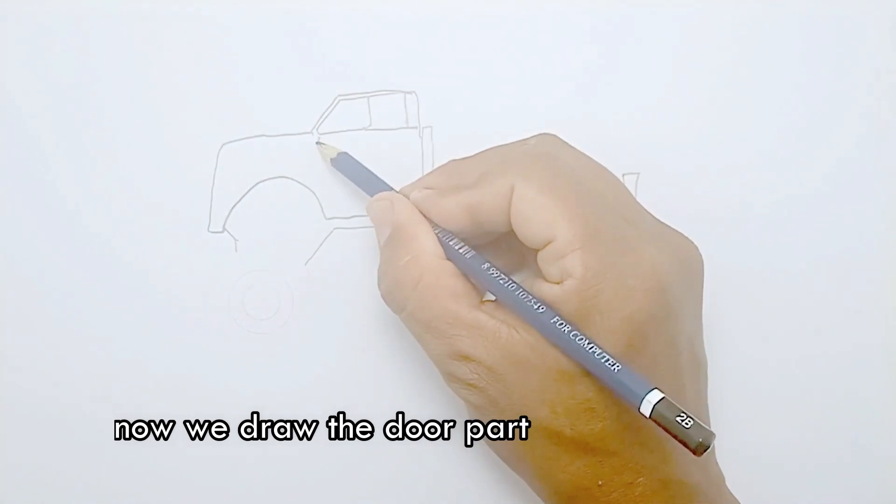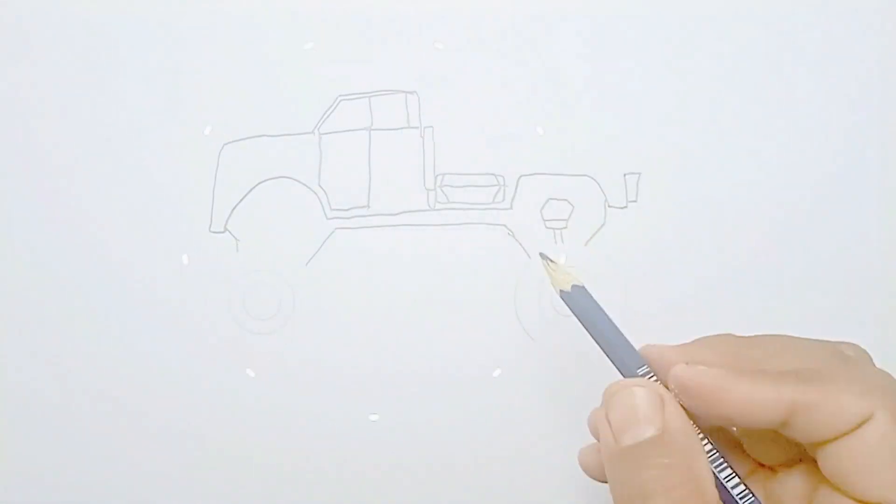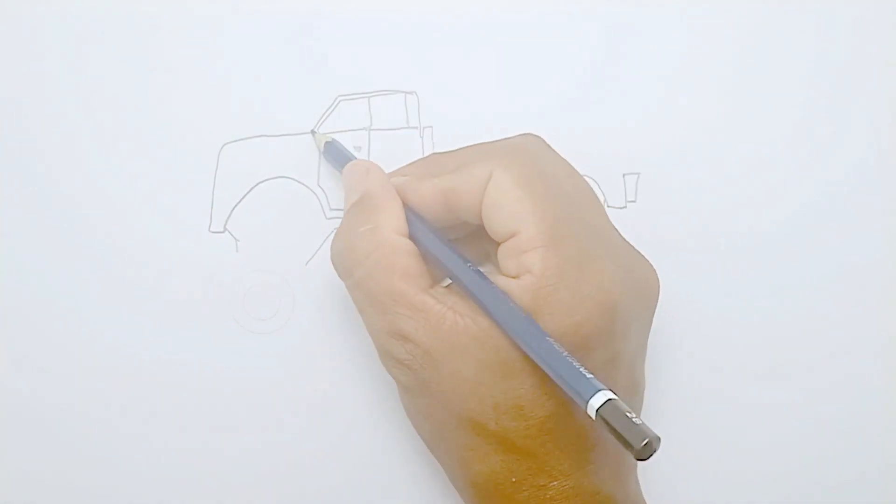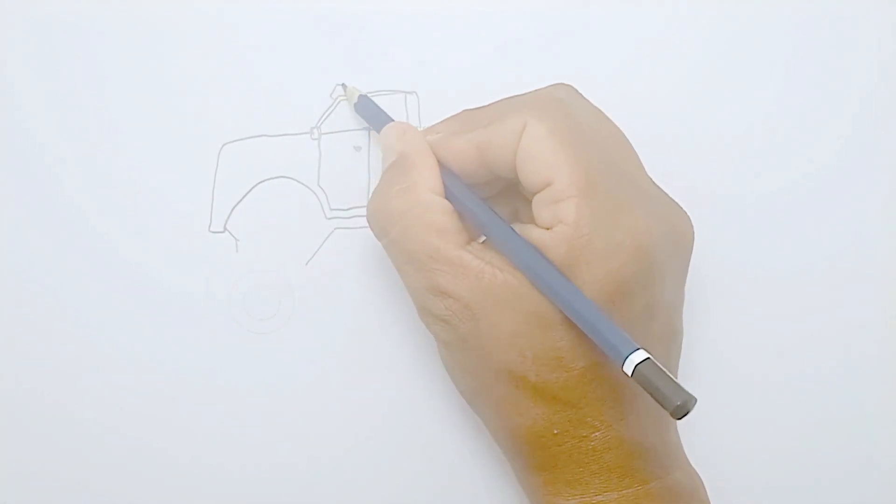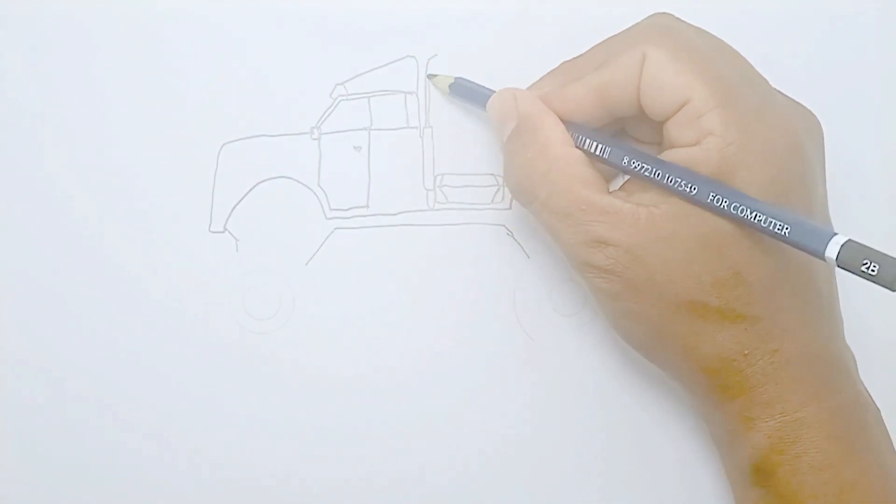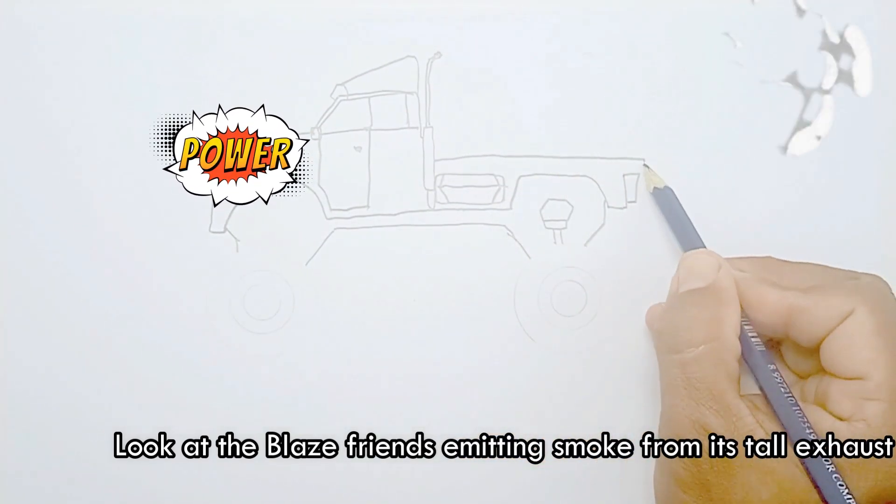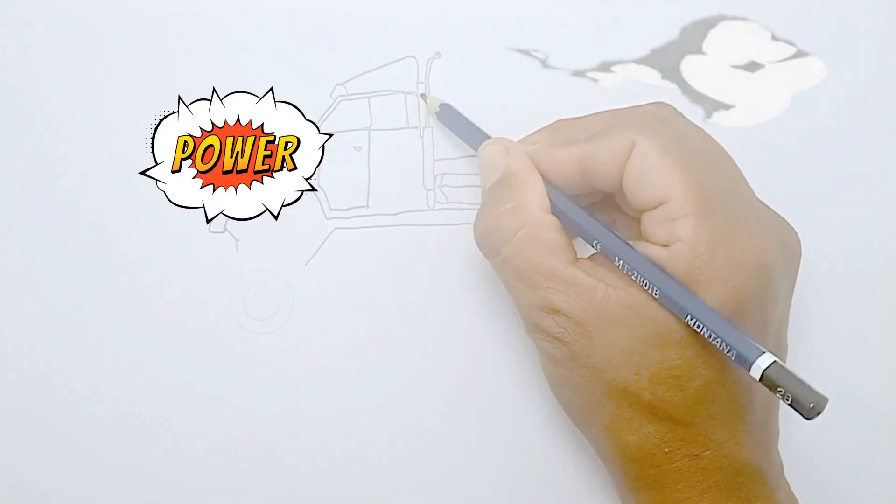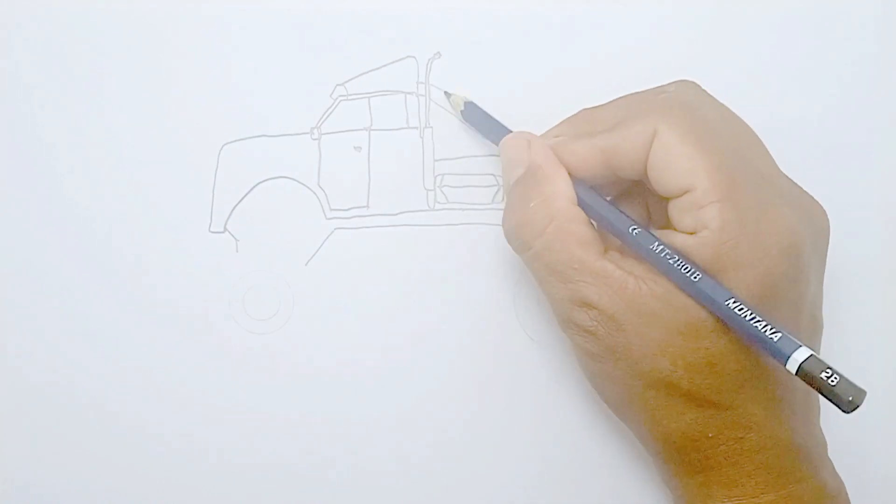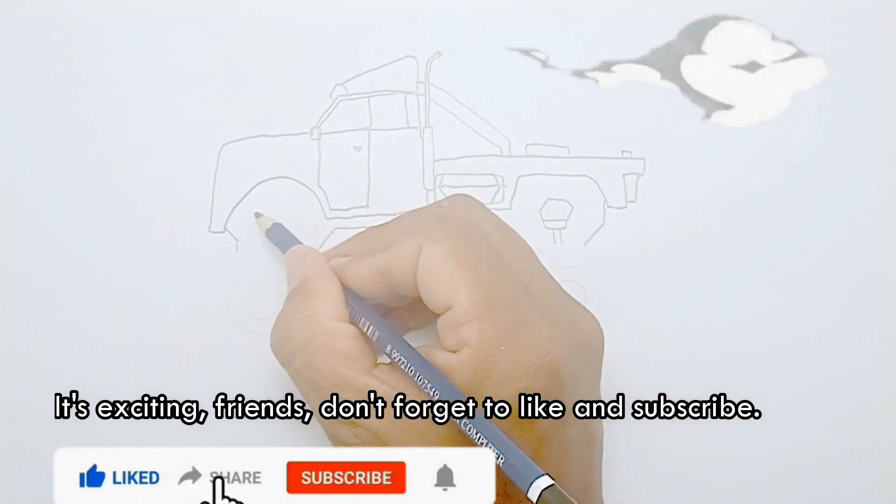Now we draw the door part. Look at the Blaze friends, emitting smoke from its tall exhaust. It's exciting friends, don't forget to like and subscribe.